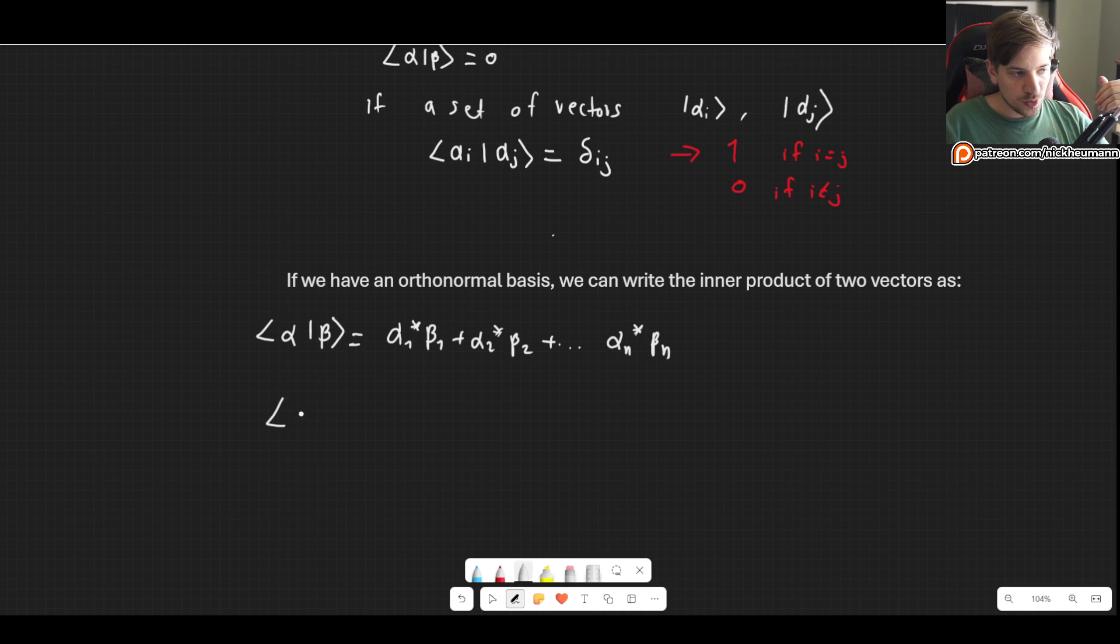Similarly, if we have an orthonormal basis, we can write the norm as simply the inner product of alpha with itself. It gives us alpha 1 conjugate alpha 1 plus alpha 2 conjugate alpha 2. That's simply the modulus of alpha 1 squared plus the modulus of alpha 2 squared, all the way until the modulus of alpha n squared.